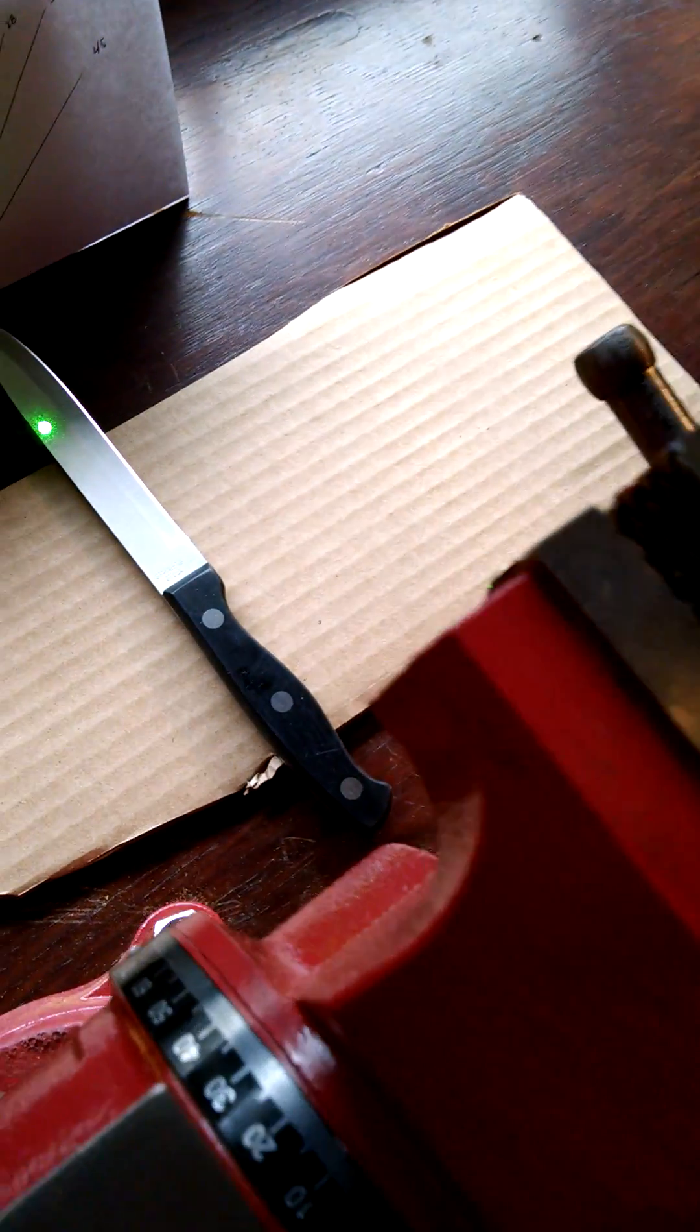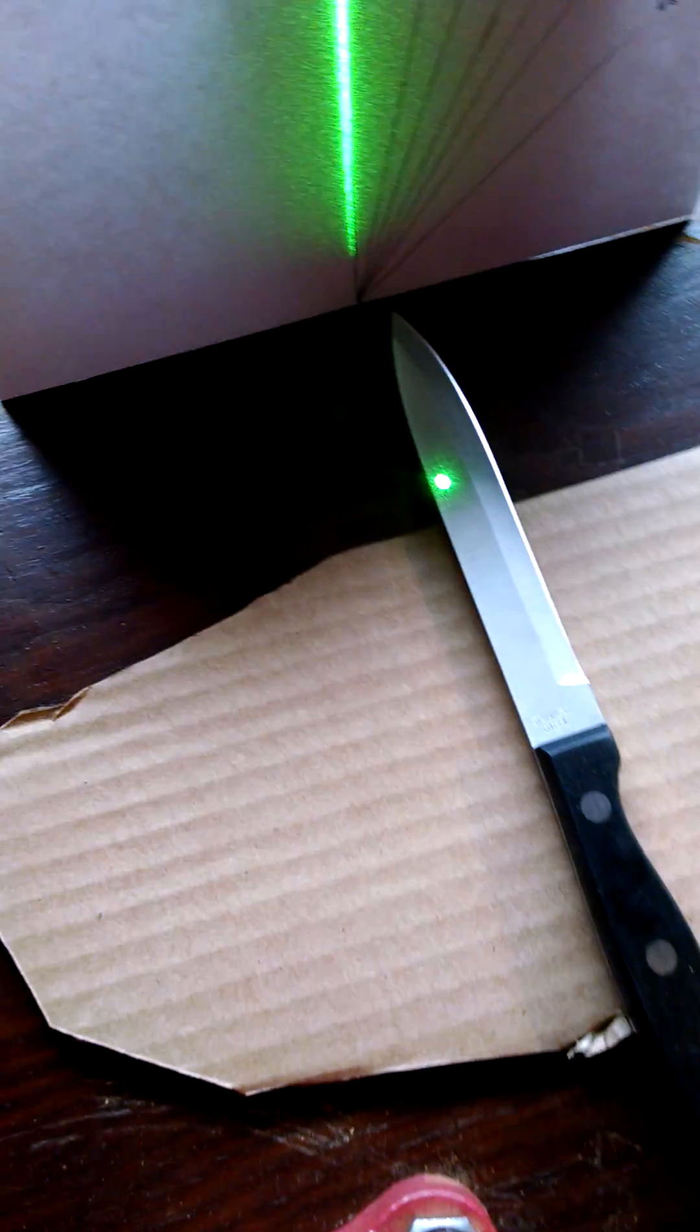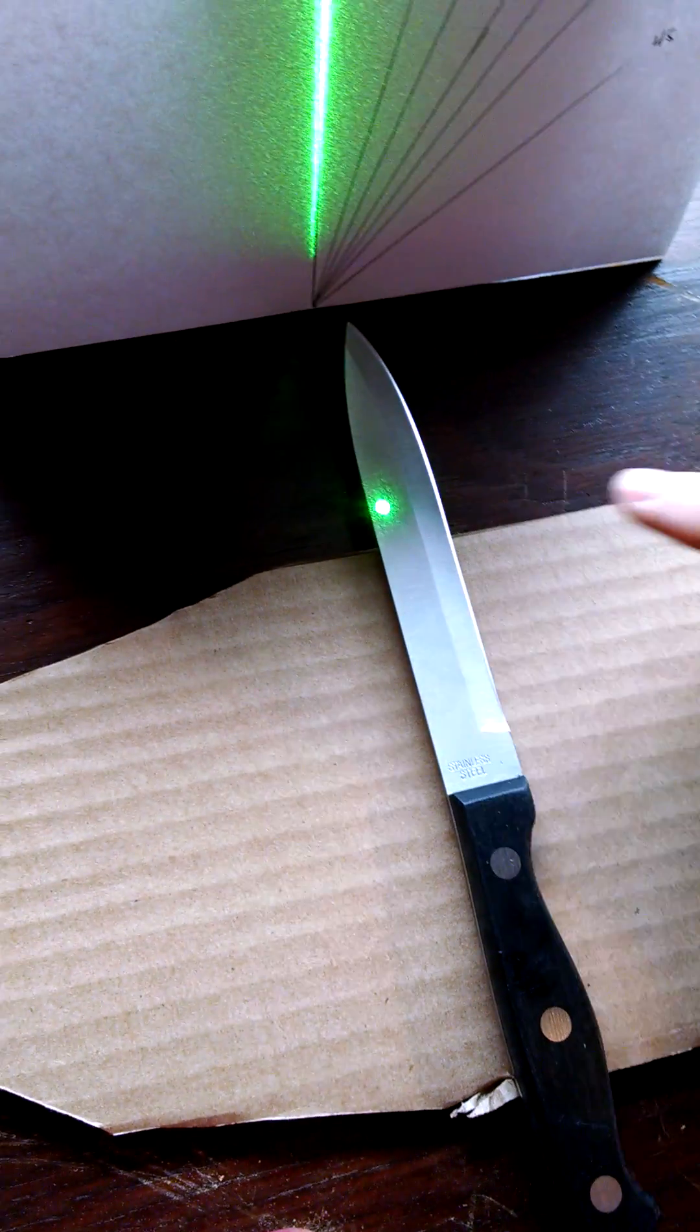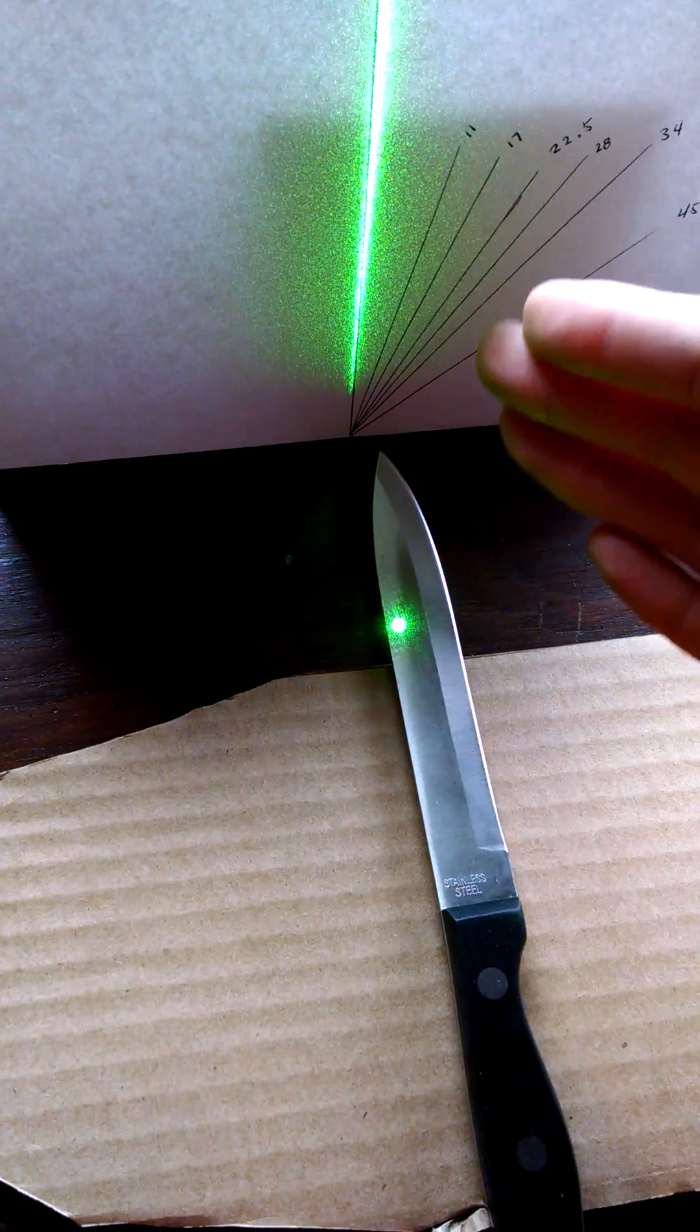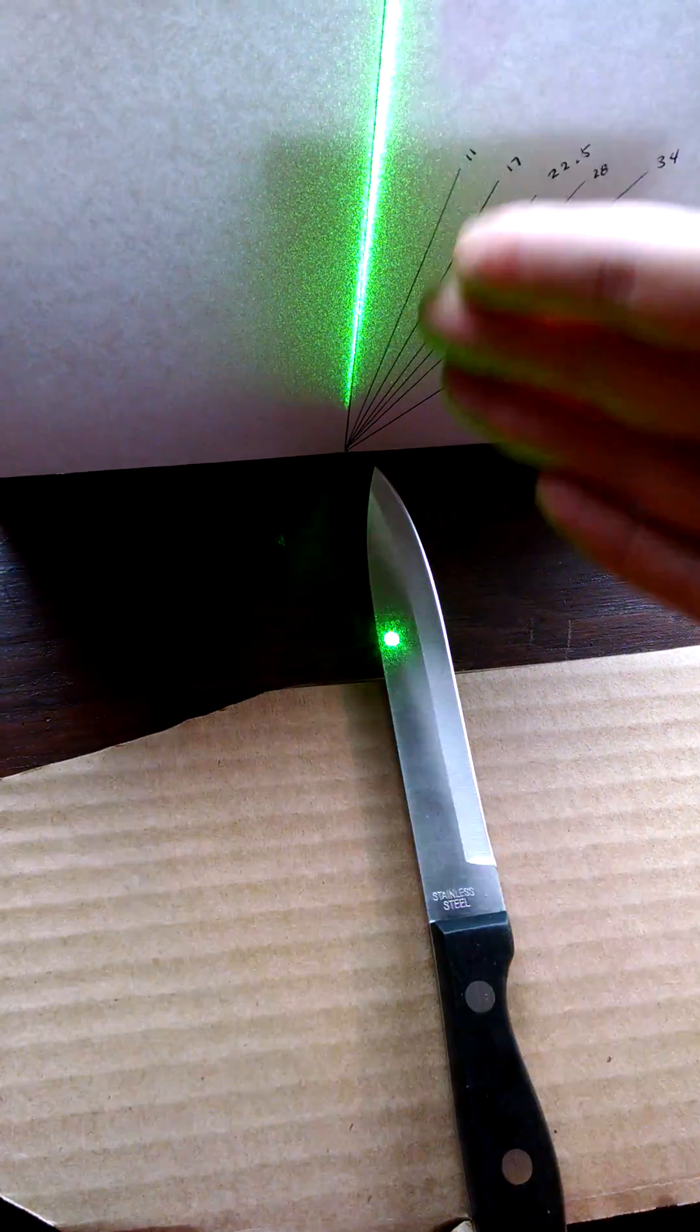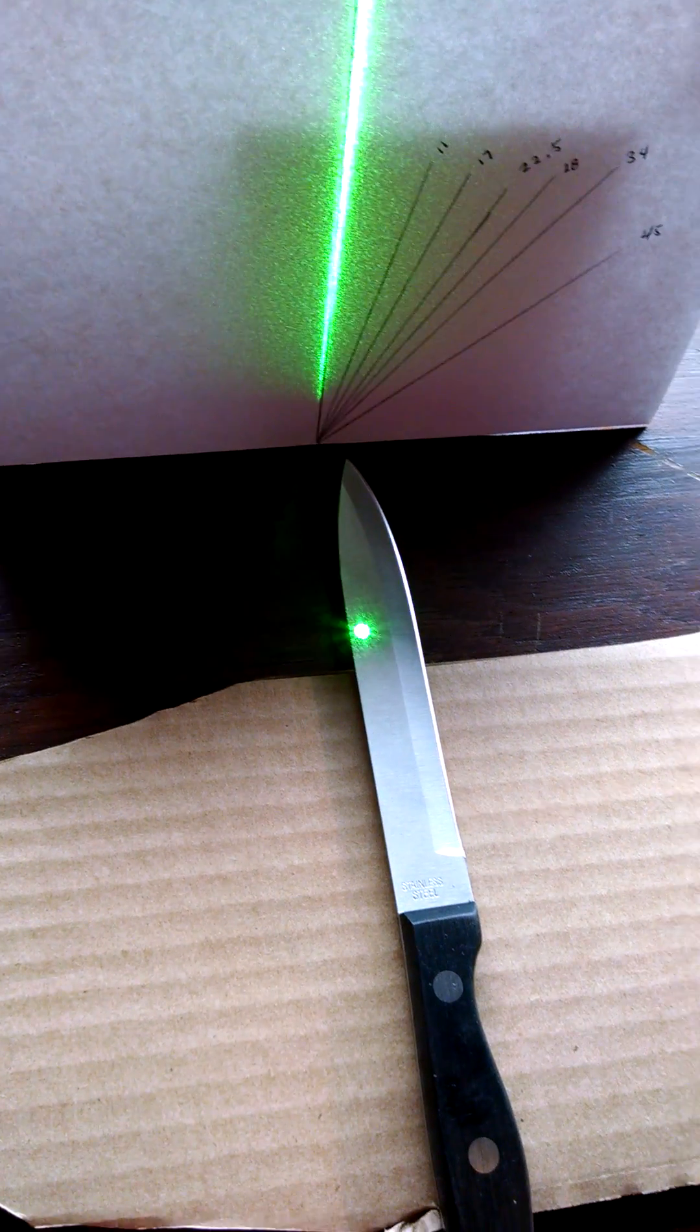I've got the laser pointer just pointing at the surface of the knife. As you can see, this part of the knife is completely flat, so it's perpendicular, and the protractor says zero, or we would say 90, but we're calling that zero.